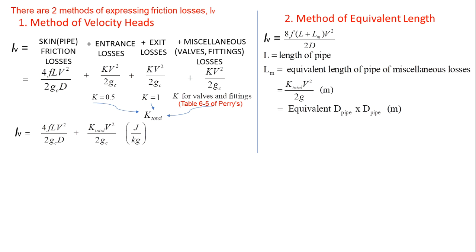For method of equivalent length, this is the equation. Where L equals length of pipe and Lm equals equivalent length of pipe of miscellaneous losses. The unit for Lm is also in meters. Lm can be solved using these two equations: equations for velocity head or equation of equivalent pipe diameter multiplied by pipe diameter.